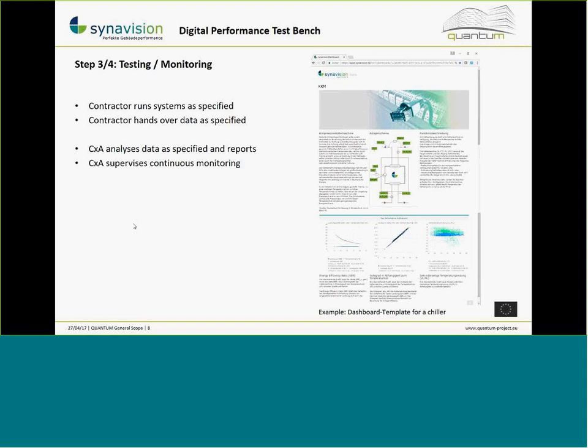The contractor hands over the data for the testing period from the building management system as specified. Then the commissioning authority and quality manager create a report. Within the Test Bench this is done within the same document — you put the data in and there is a powerful, simple mechanism to link specification and operation data. You immediately get a report showing: this is the chiller, this is the specification, this is the data received, and the tool shows exactly whether all items have been met.